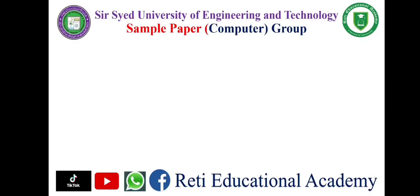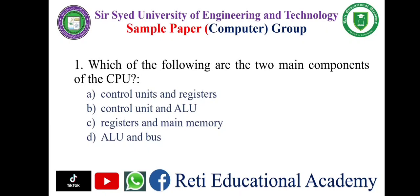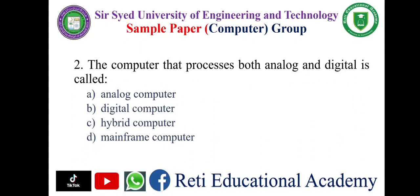Computer MCQs. These MCQs will help you for the preparation of the entry test of Sir Syed University of Engineering and Technology, Computer Group. Question number one: Which of the following are the two main components of the CPU? A. Control unit and registers, B. Control unit and ALU, C. Registers and main memory, D. ALU and bus. The correct answer is B: control unit and ALU. Question number two: The computer that processes both analog and digital is called — A. Analog computer, B. Digital computer, C. Hybrid computer, D. Mainframe computer. The correct answer is C: hybrid computer.